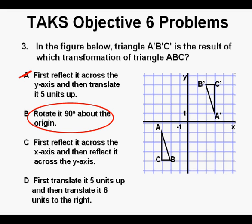Next, we'll take a look at answer B. Here is triangle A, B, C rotated 90 degrees about the origin. It's in red. Does it match triangle A prime, B prime, C prime? No, it doesn't, so we cross off B as well.